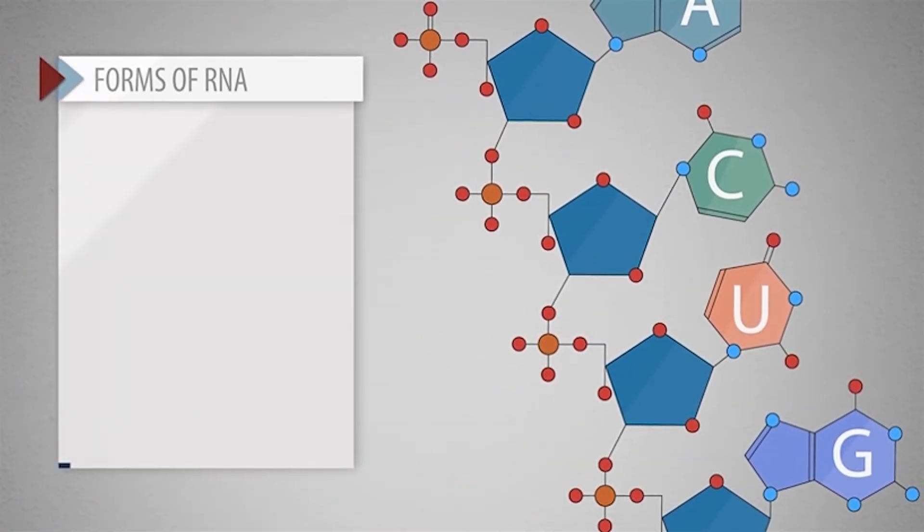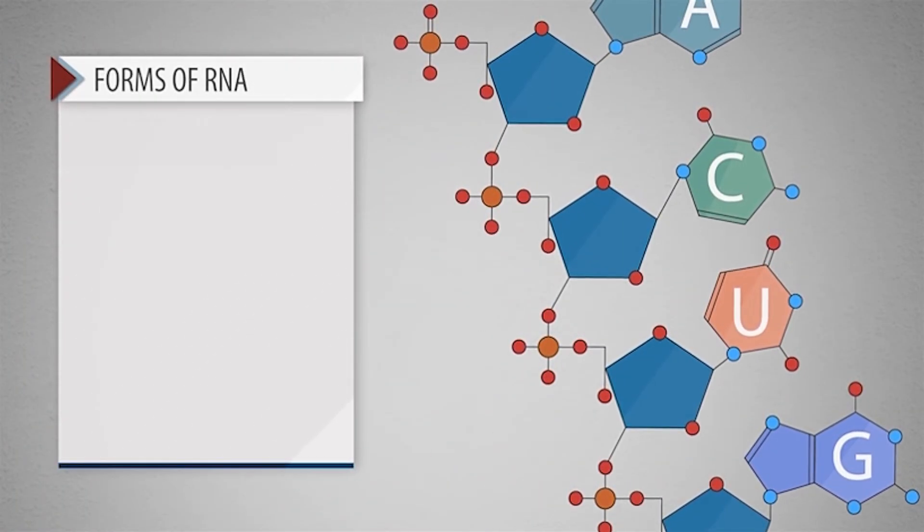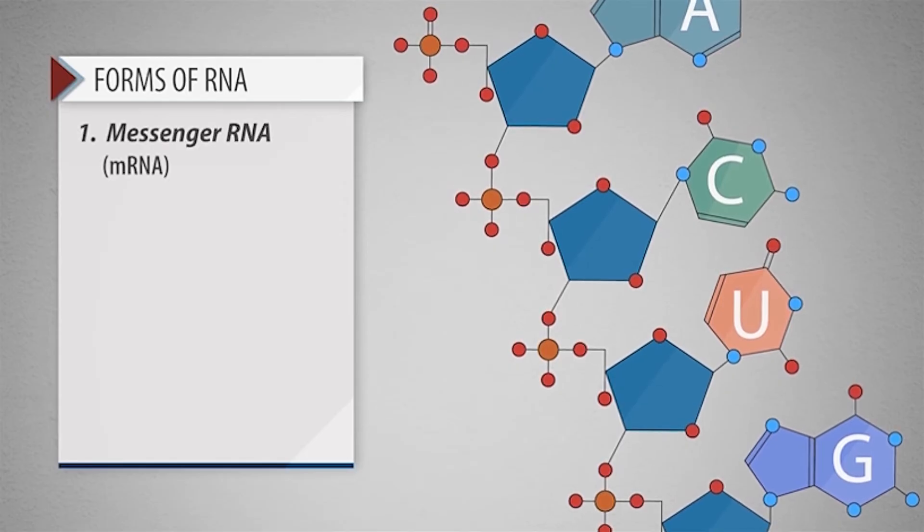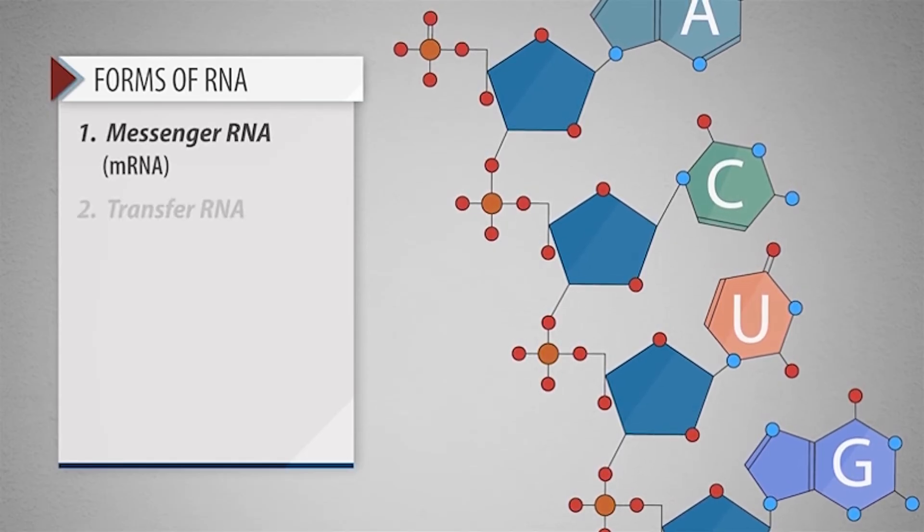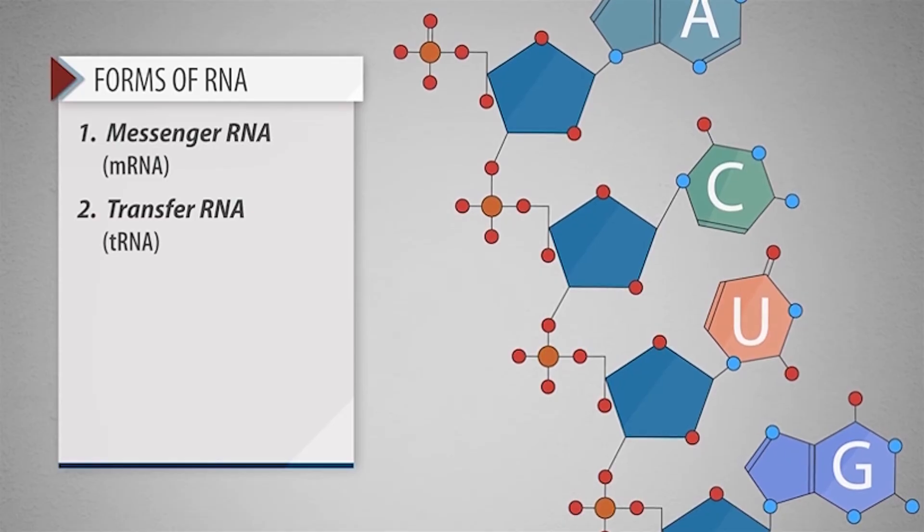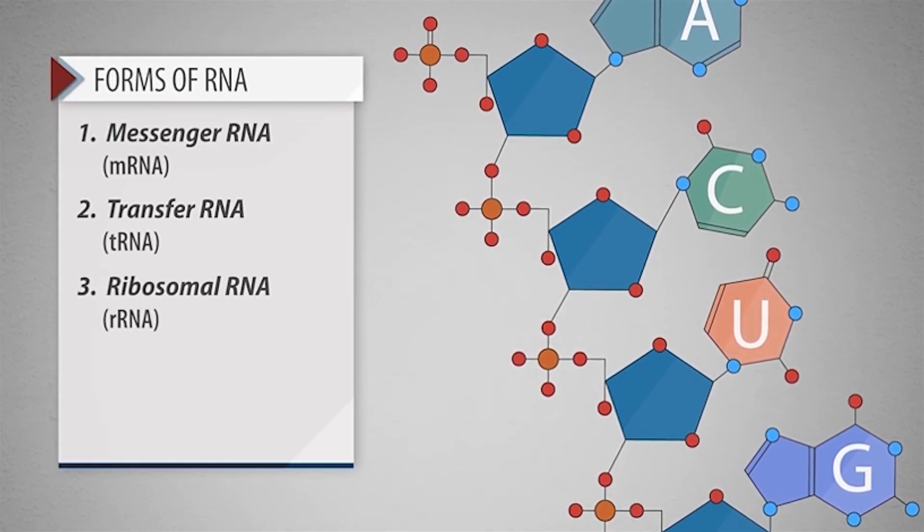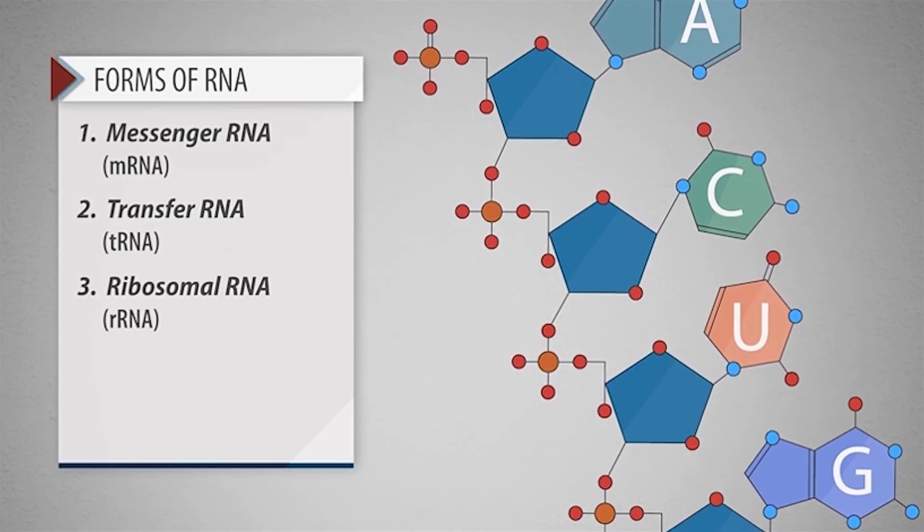Functionally, cells contain a variety of forms of RNA including messenger RNA or mRNA, transfer RNA or tRNA, and ribosomal RNA or rRNA.